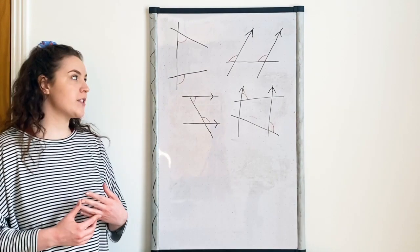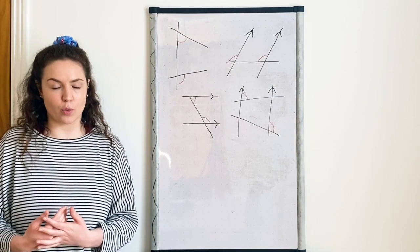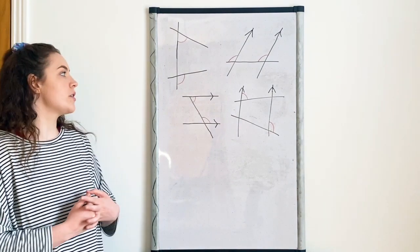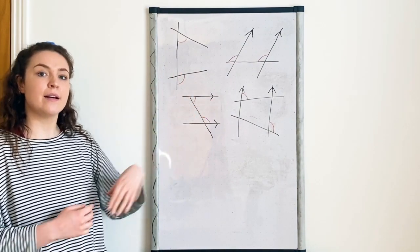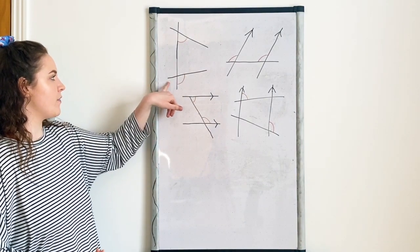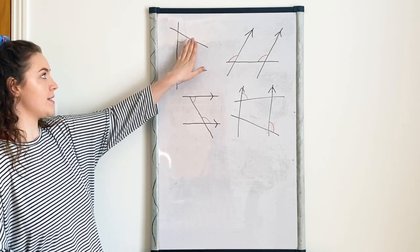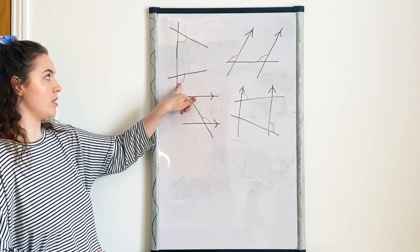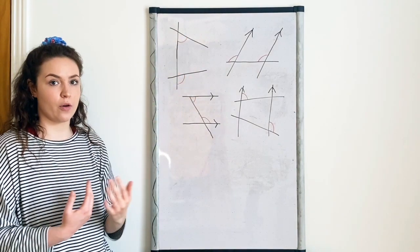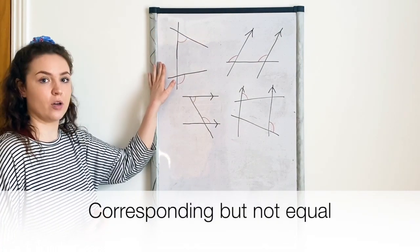I've drawn a few different examples on the board. Remember, in this video we are looking specifically for equal corresponding angles — that means corresponding angles on parallel lines. Looking at this first one, I can see that they're corresponding because they're on the same side of the transversal in corresponding positions — they're both underneath the lines. However, they are not equal corresponding angles because these two lines are not parallel. So they are corresponding but not equal.